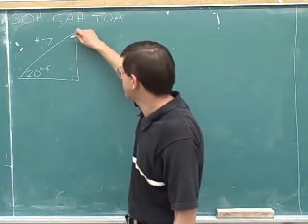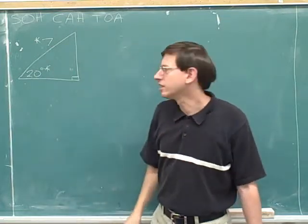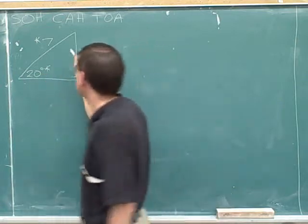Well, the easiest thing to do is to start by finding this angle. We know that these two angles of the right triangle have to add up to 90. So this angle must be 90 minus 20, which is 70.